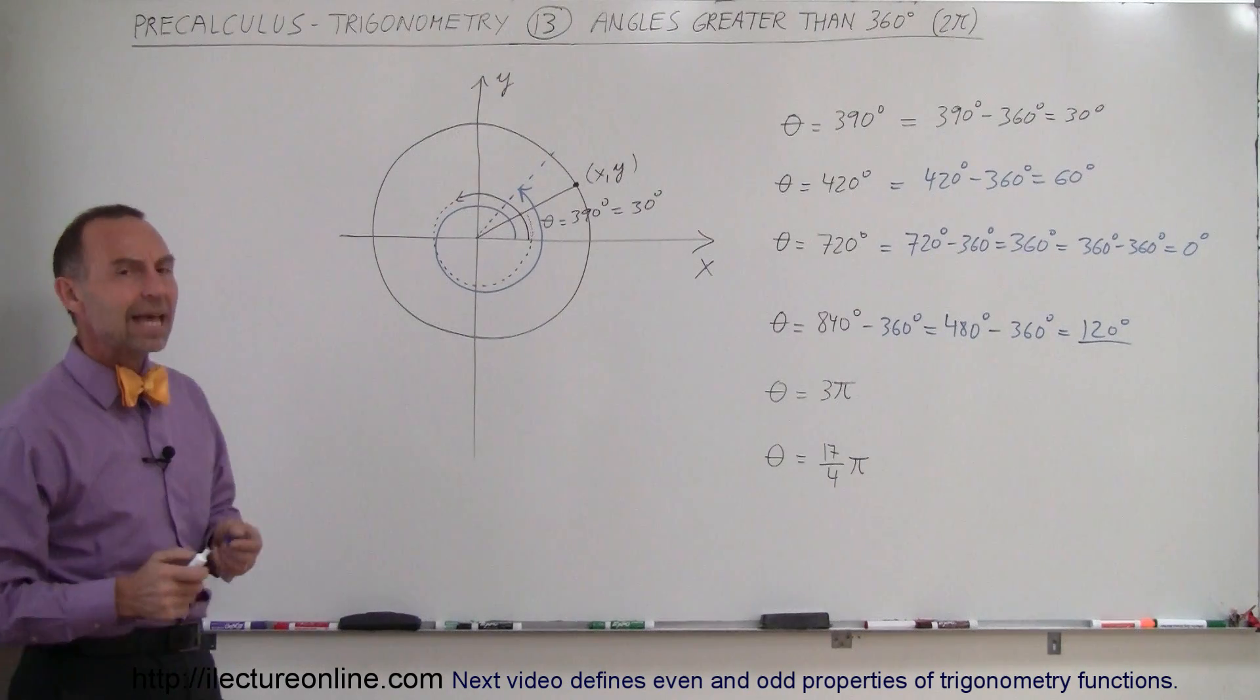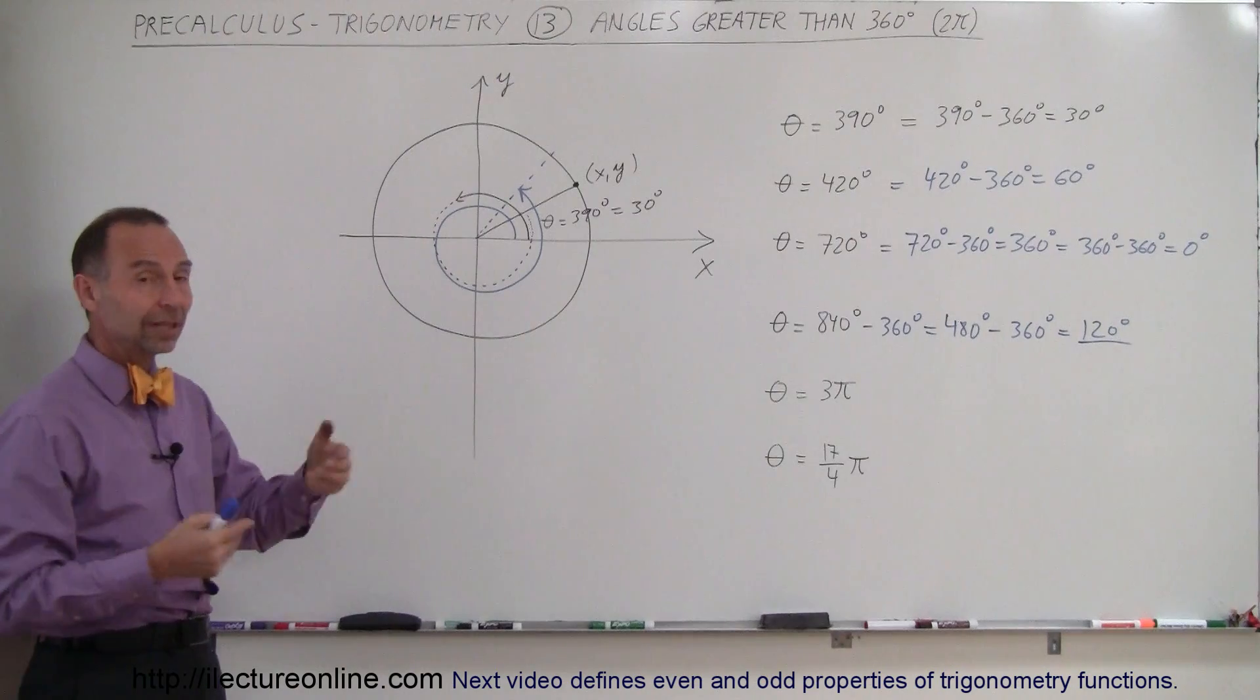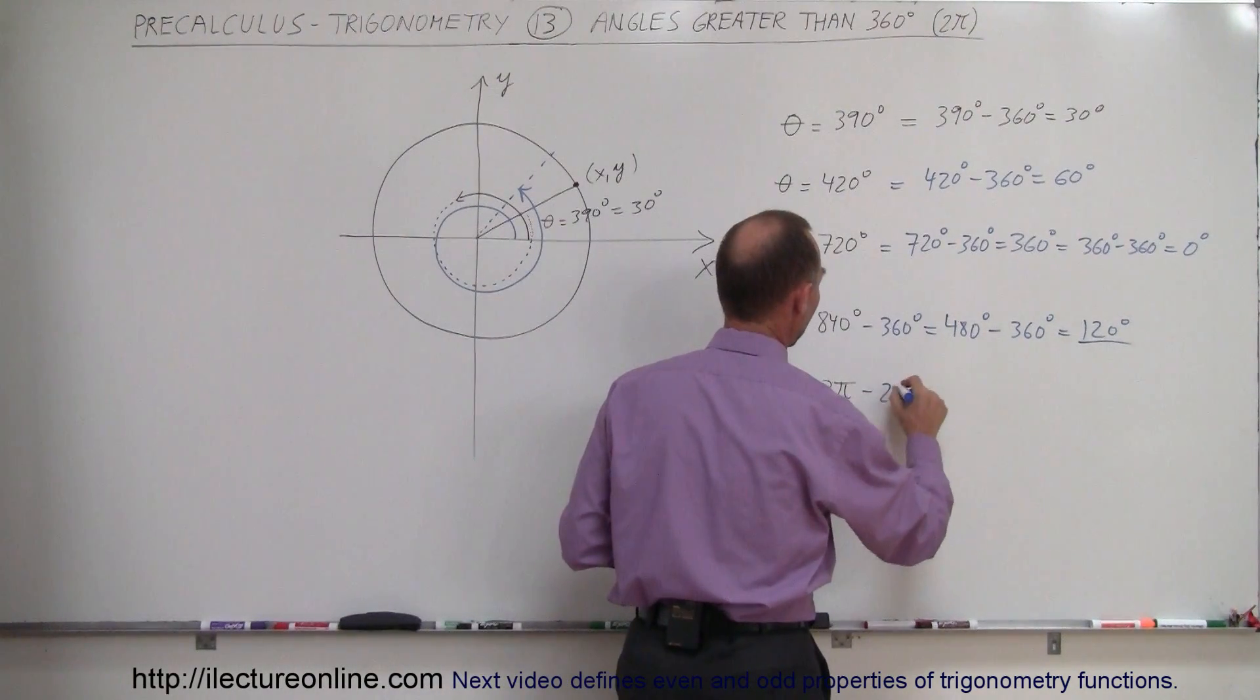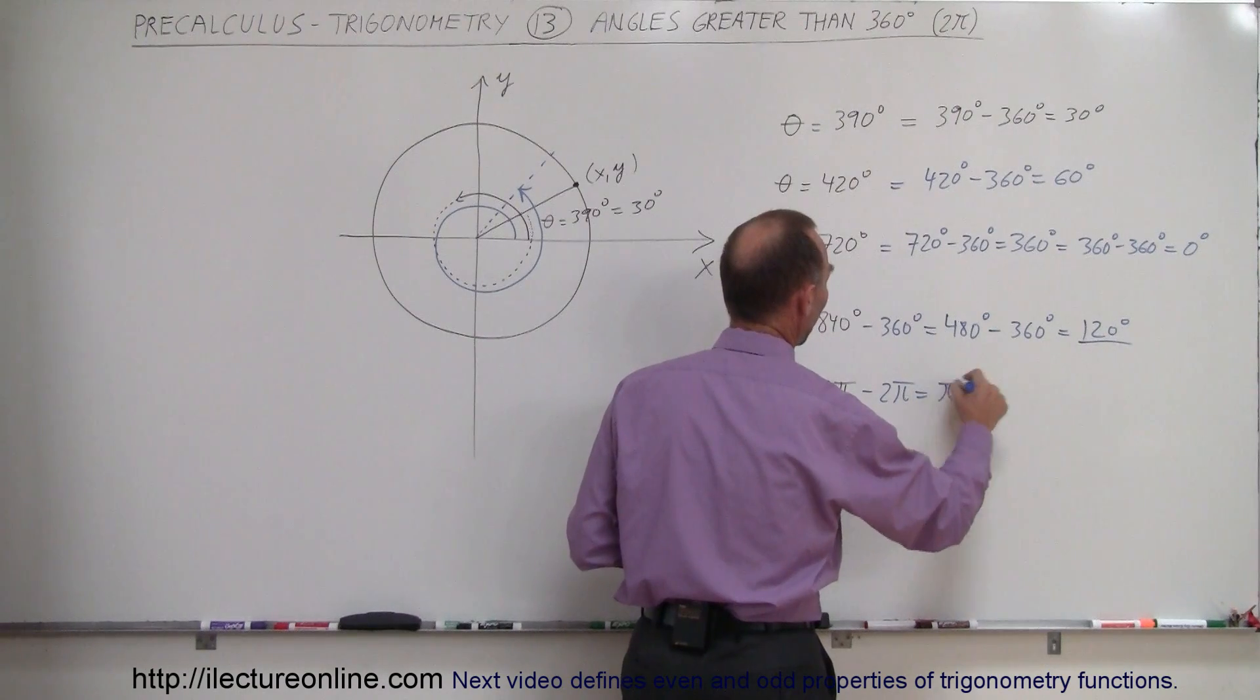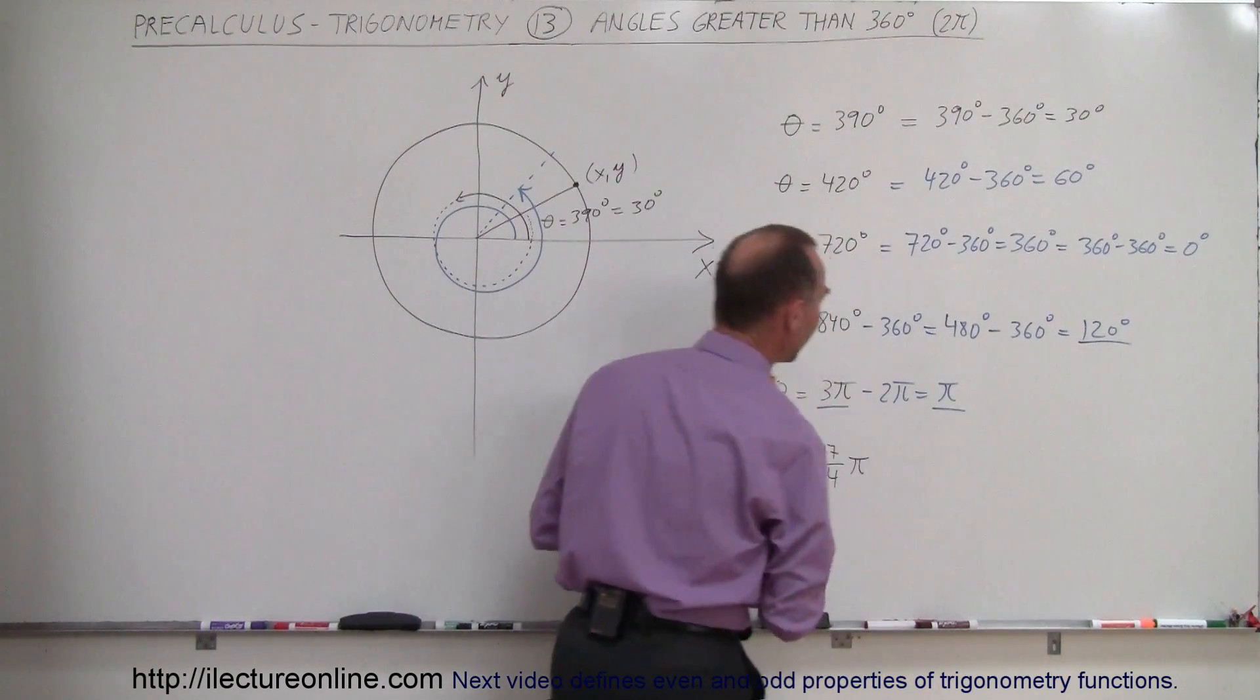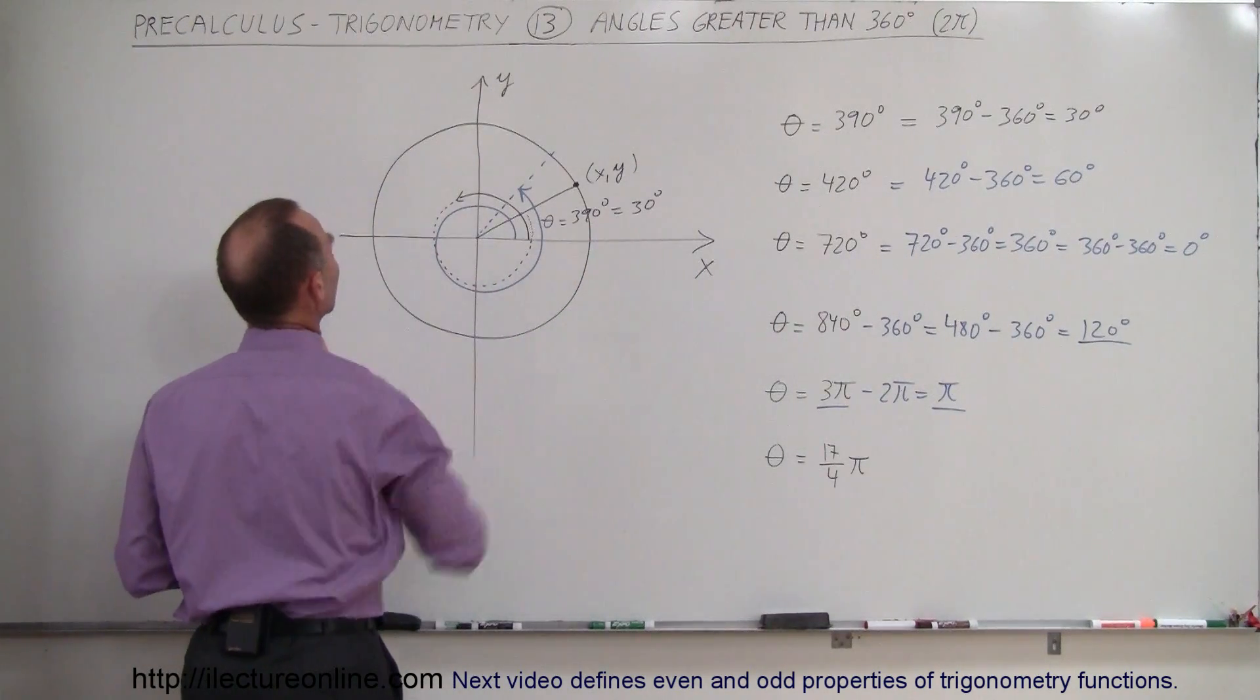How about when we have the angle in terms of radians rather than degrees? Well, again, any time you go around the circle, that's equal to 2π, so we subtract 2π from that minus 2π, and we get π. In other words, an angle of 3π is the same as an angle of π. An angle of π is 180 degrees—that brings you right over to this side right there.